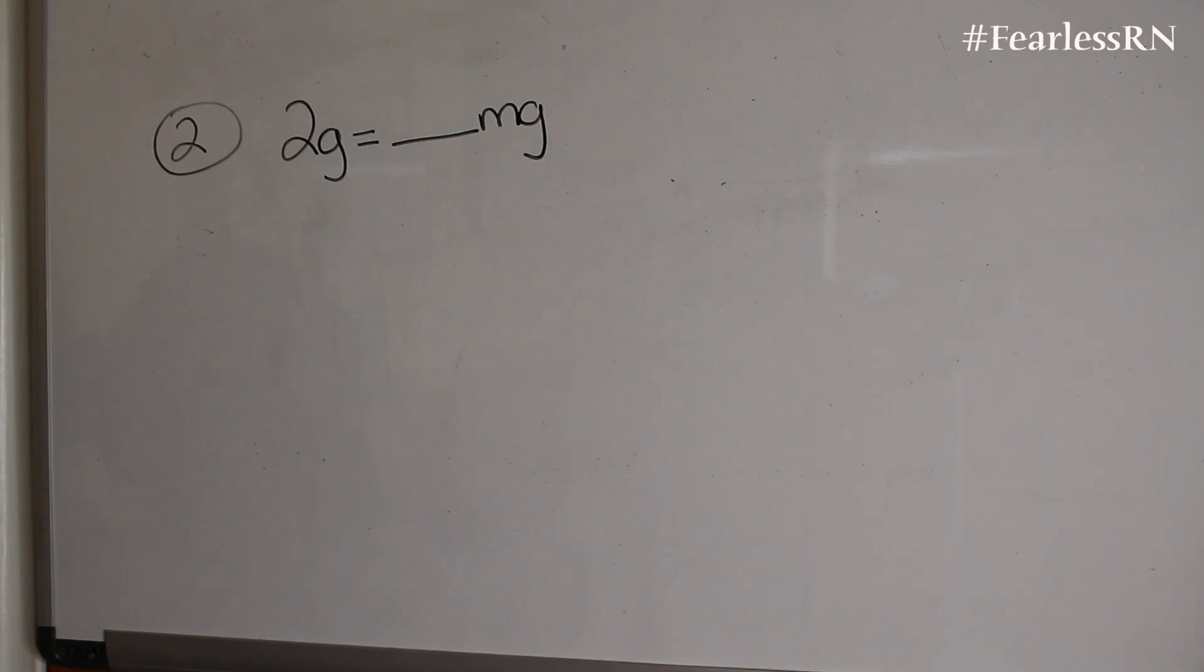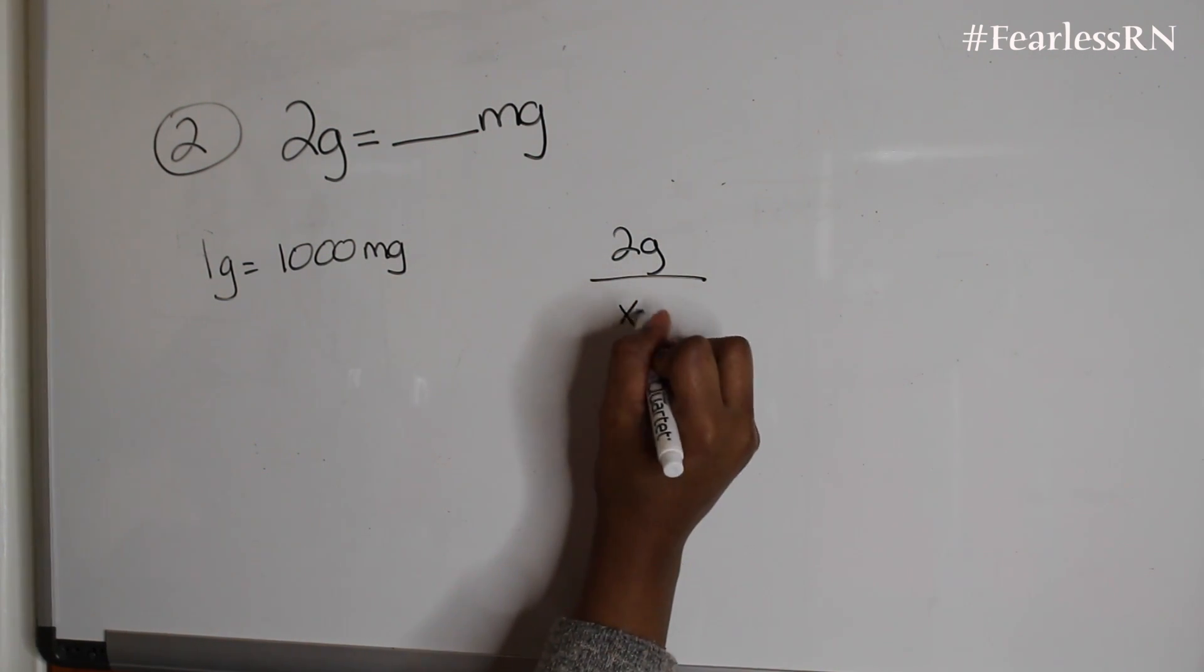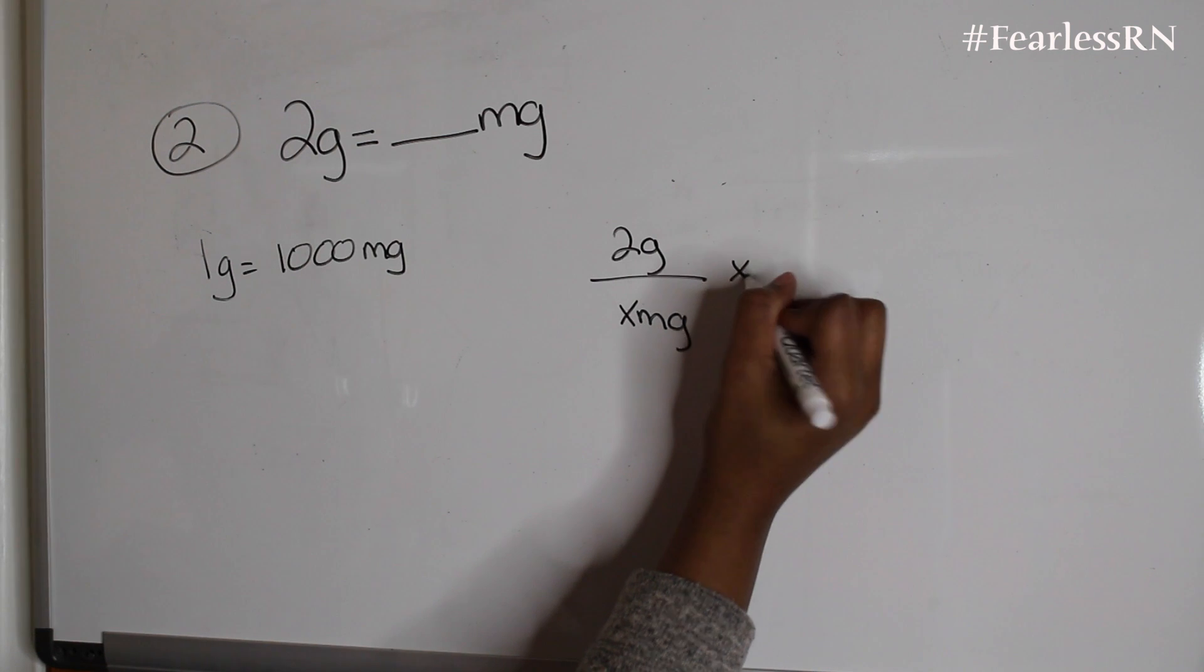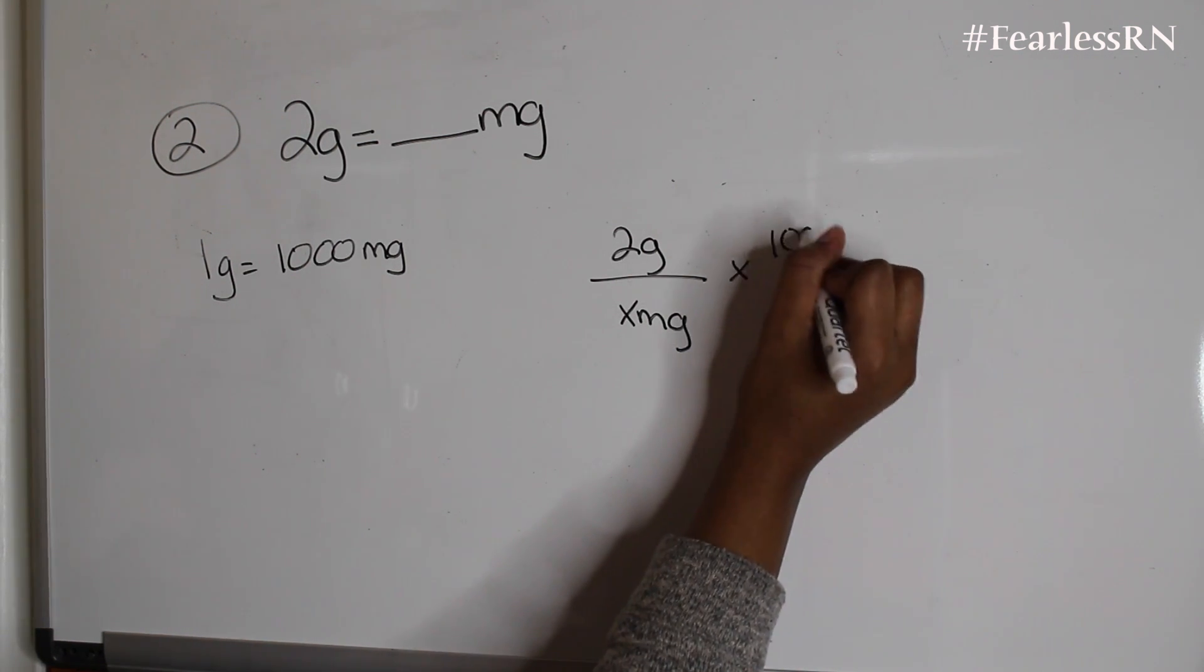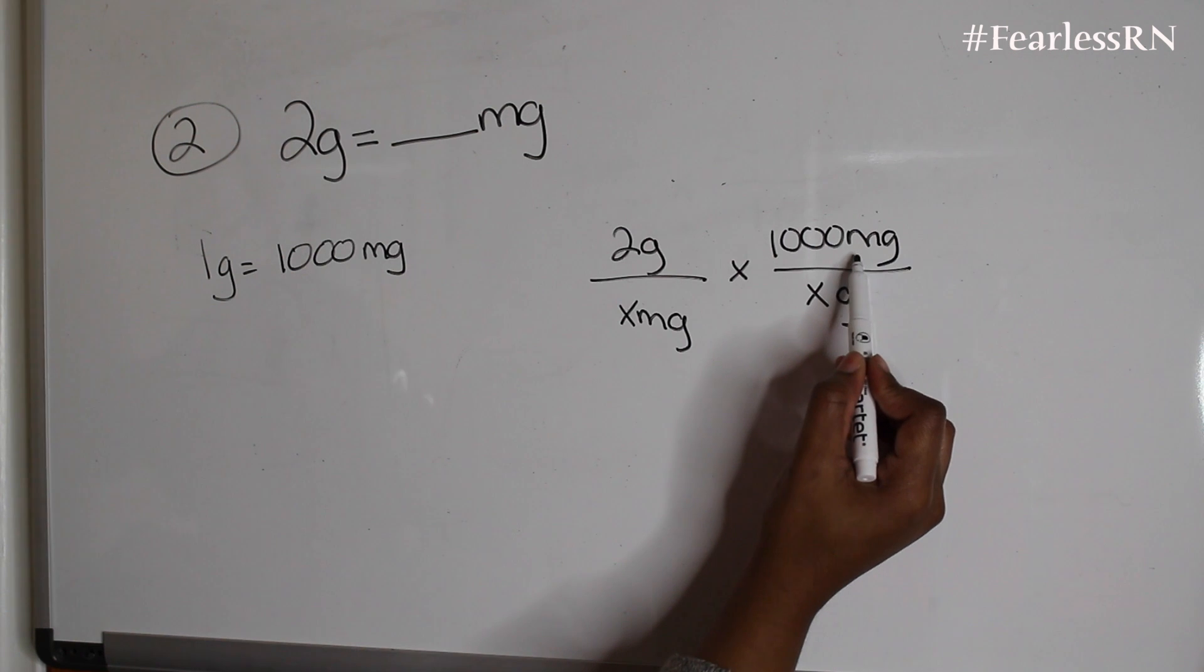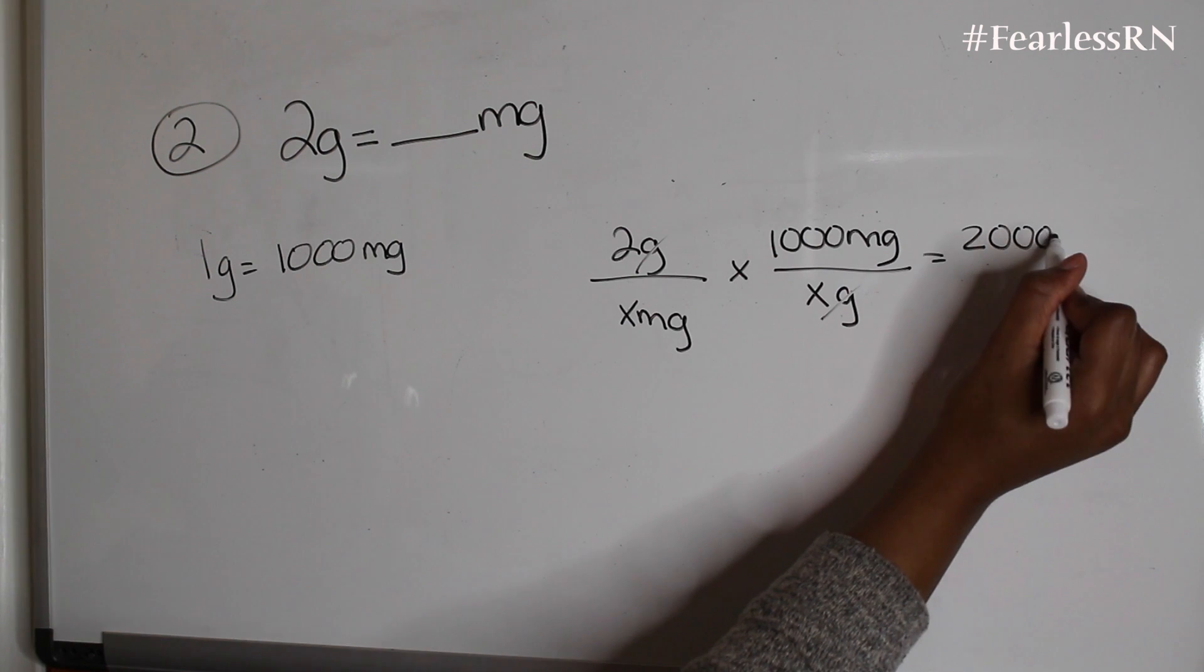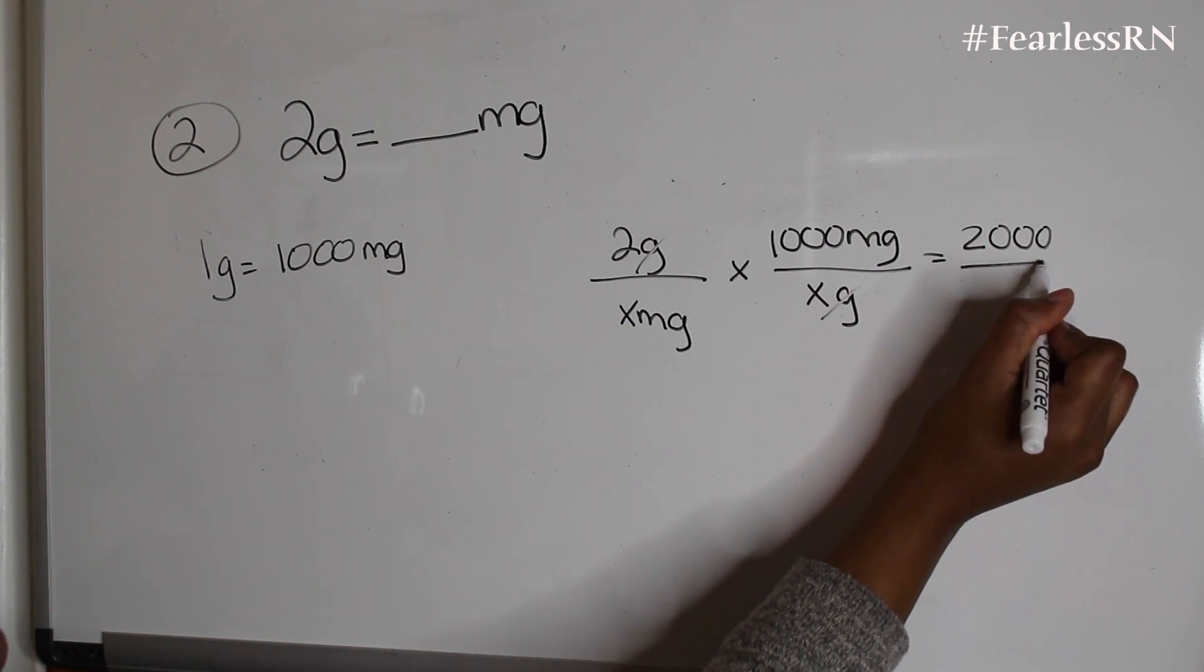So this next problem is 2 grams equals how many milligrams? So using the metric table, we know that 1 gram equals 1,000 milligrams. So we're going to set up our problem: 2 grams over x milligrams times 1,000 milligrams over x grams. And then we want to get to milligrams, so we're going to cross out this and multiply straight across. So 2 times 1,000 equals 2,000 over nothing, and that is the answer right here.